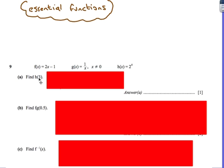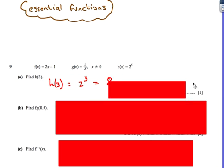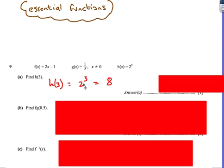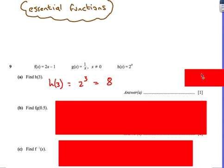So let's find h of 3. h of 3 simply means that we replace the x that was here with 3, so we just get h of 3 is 2 to the power of 3, which is 8.